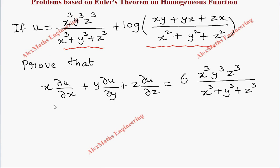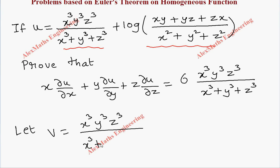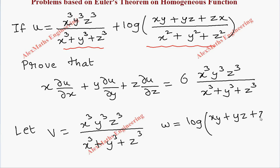Let v equal the first function: x³y³z³ divided by x³ + y³ + z³. The other function w is log of (xy + yz + zx) divided by x² + y² + z².